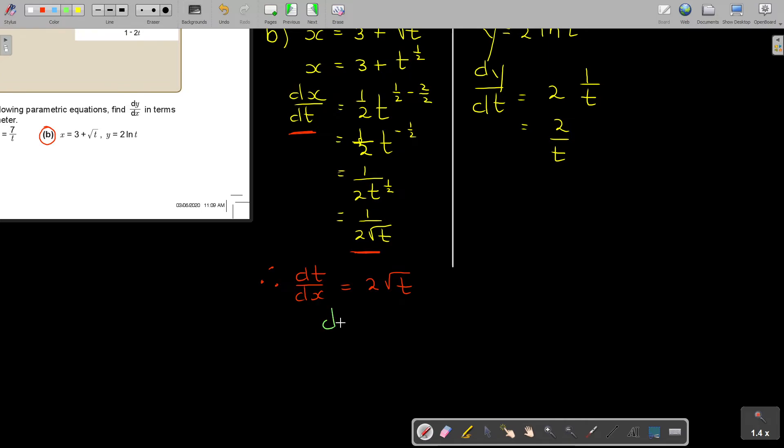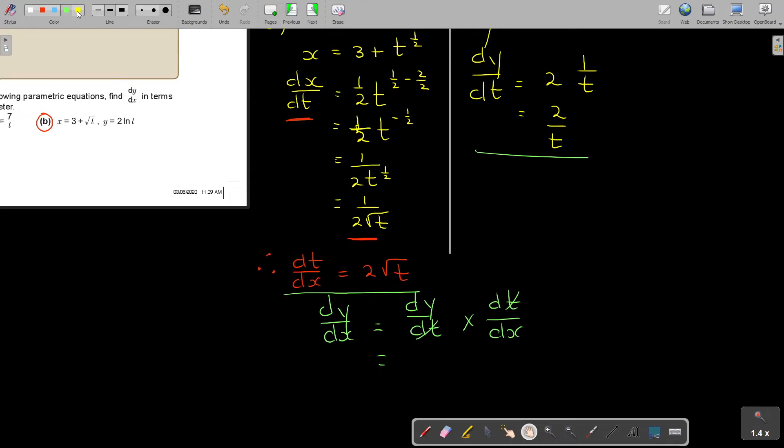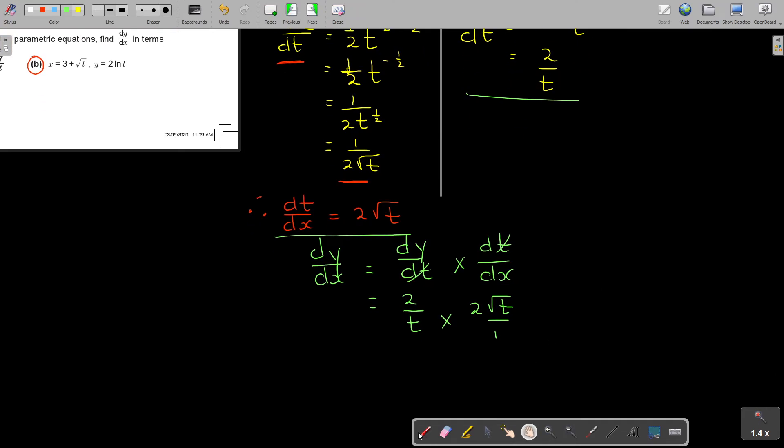So if I'm going to say dy over dx, it's equal to, let's just go dy over dt, multiply dt over dx. There is my 2. So this cancel. So basically, dy over dx, so let's just go and write it. So it's 2 over t, multiply 2 square root t over 1. And that is going to be 2 times 2, so it's 4.